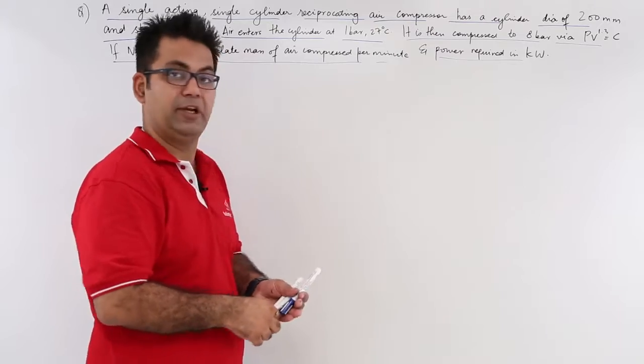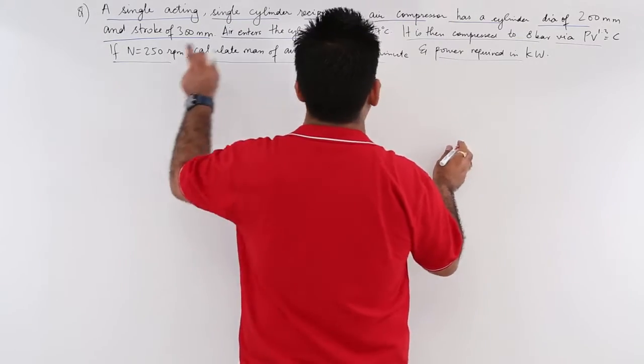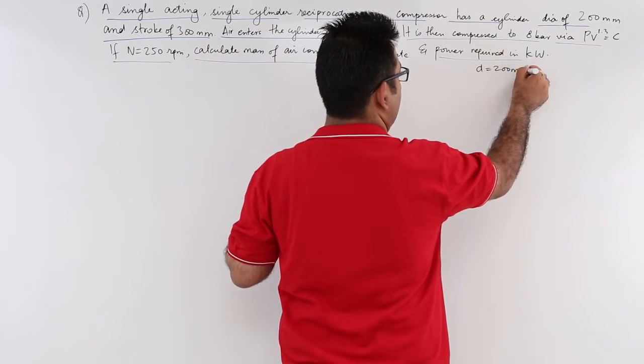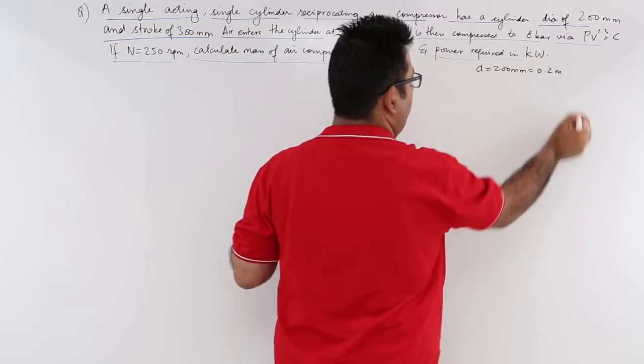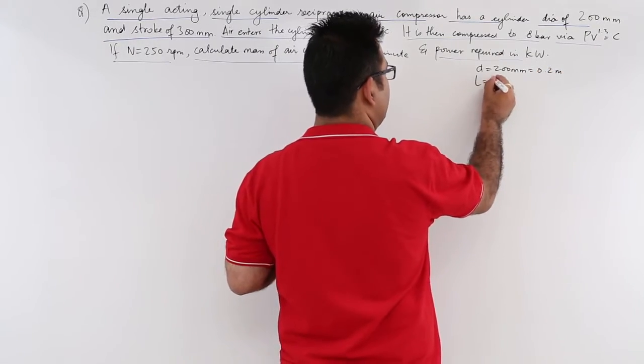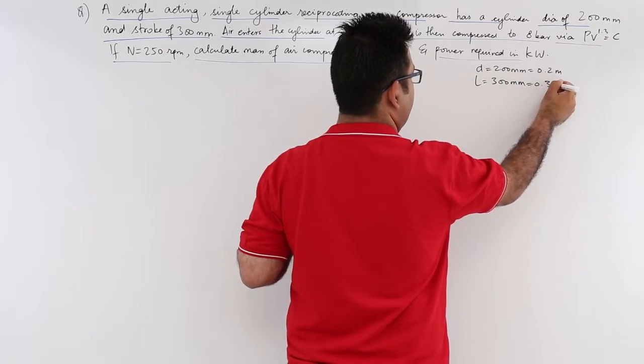Now let's write down the data which is given to us. The diameter of cylinder is 200 mm which is 0.2 meters. The length of stroke is 300 mm which is 0.3 meters.